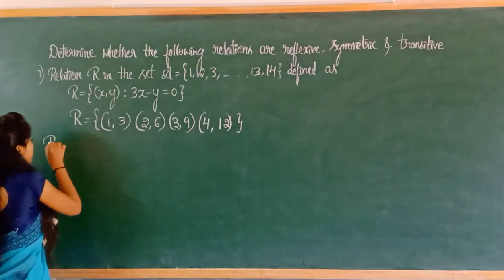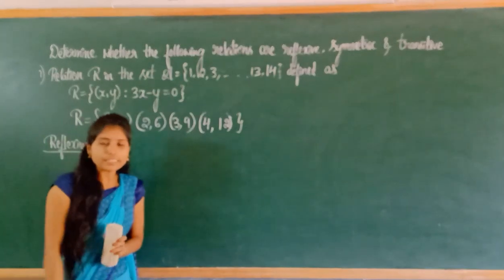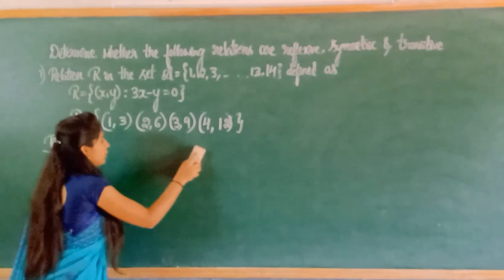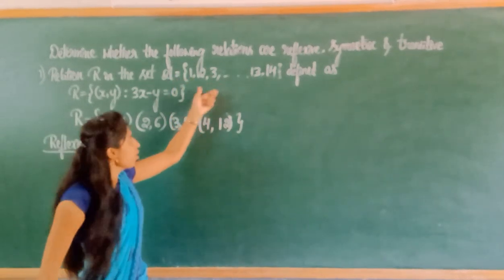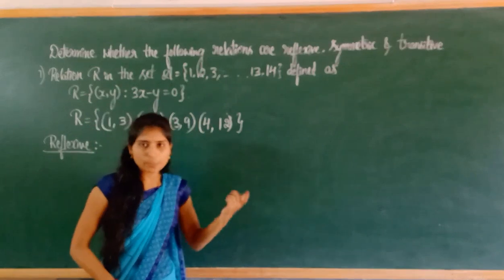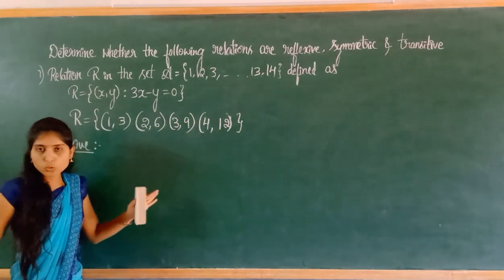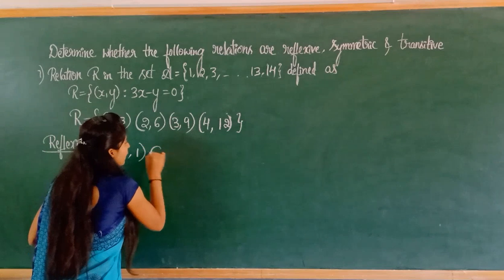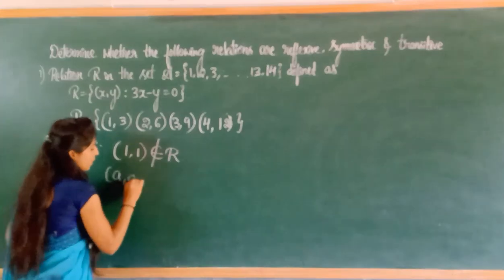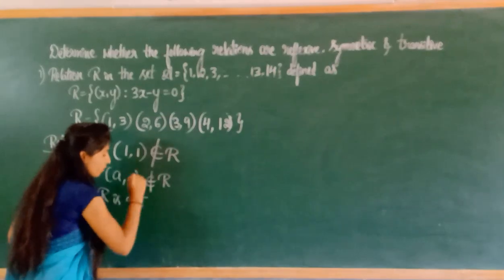The first condition is reflexive. For reflexive, the condition is that (a, a) belongs to R — all elements of set A should have a double pair. But here, no ordered pair like (1,1), (2,2), (3,3) up to (14,14) is in the relation. So (1,1) does not belong to R. Therefore, R is not reflexive.